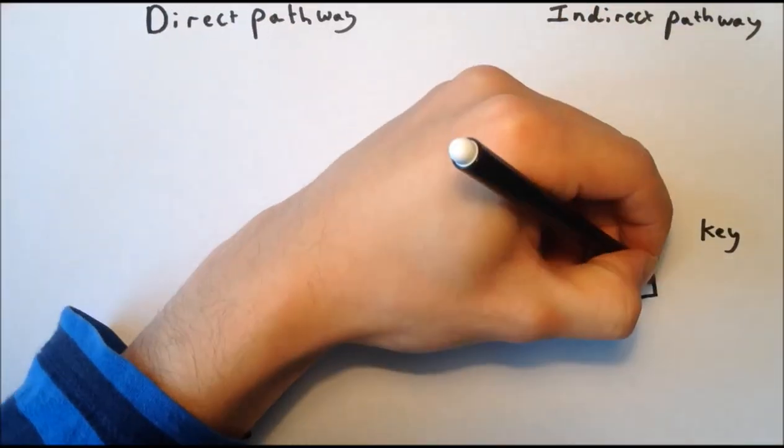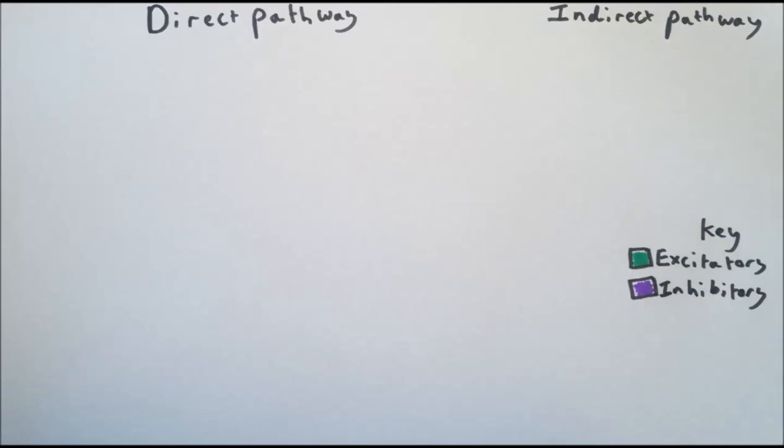The classic model of the connections between the nuclei in the basal ganglia is the direct and indirect pathways model. In this model, there are two important pathways of connections between the nuclei, the direct pathway and the indirect pathway.